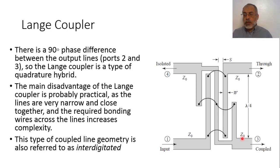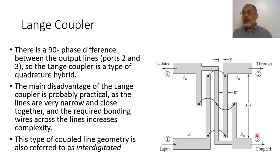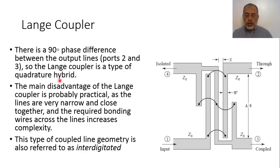This means that the Lange coupler can correspond to a hybrid coupler or a quadrature hybrid coupler. We have studied before the quadrature hybrid coupler, where the input port is divided between two output ports with a phase shift of 90 degrees between them. This is the definition of the quadrature hybrid coupler. This means that the Lange coupler can be used as a hybrid or a quadrature hybrid coupler, with a 90-degree phase difference between output port 2 and port 3, and a coupling coefficient of 3 dB.